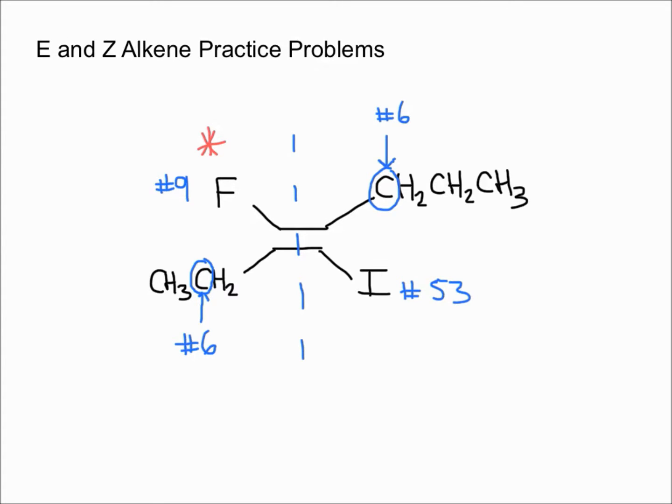Now let's do the right side. We have iodine as number 53 and this carbon right there as number 6, so therefore the iodine is going to get higher priority. Remember if you have the higher priority on opposite sides, it's an E isomer.